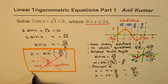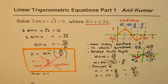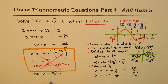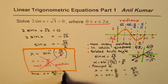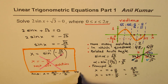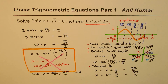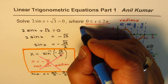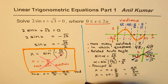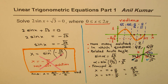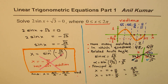So I can write down the final answer: x equals 4 pi by 3 and 5 pi by 3. These are in radians. Radians is a ratio, so even if you don't write radians it is understood, but it's good to write.